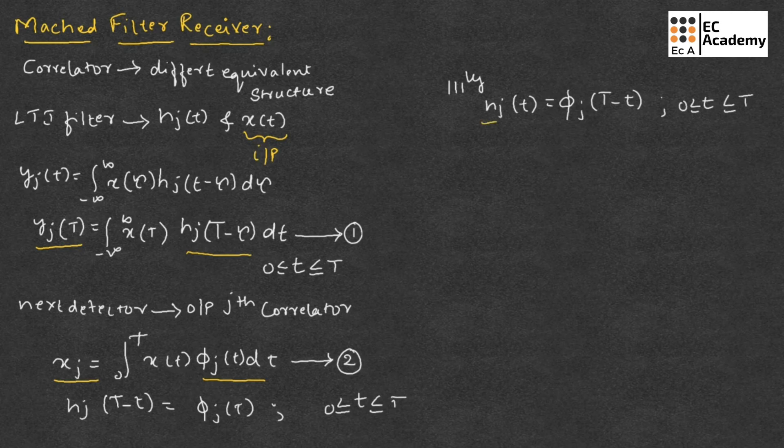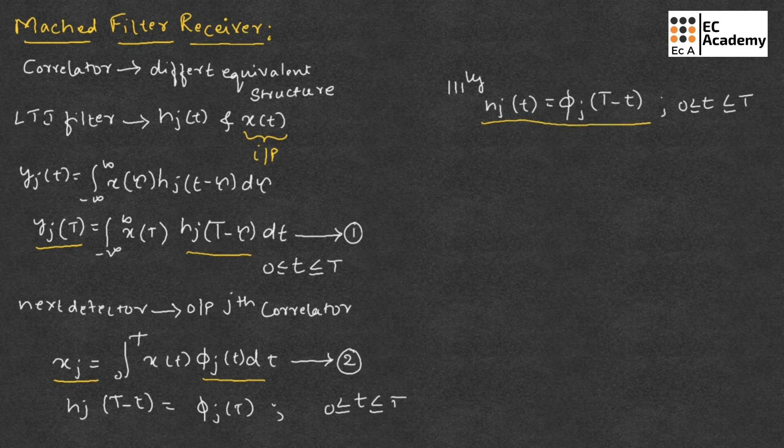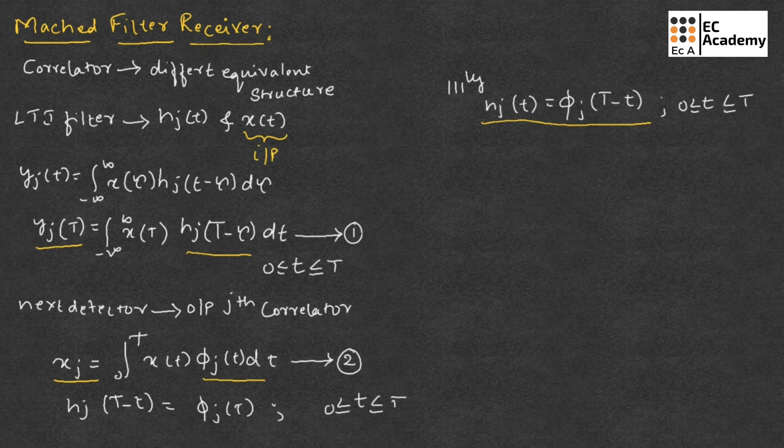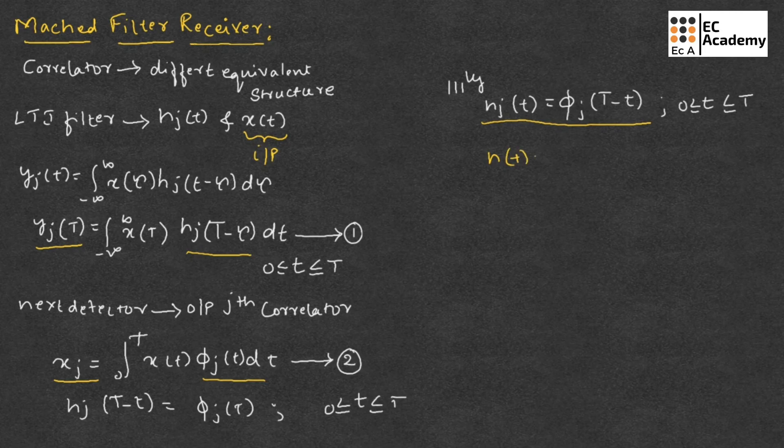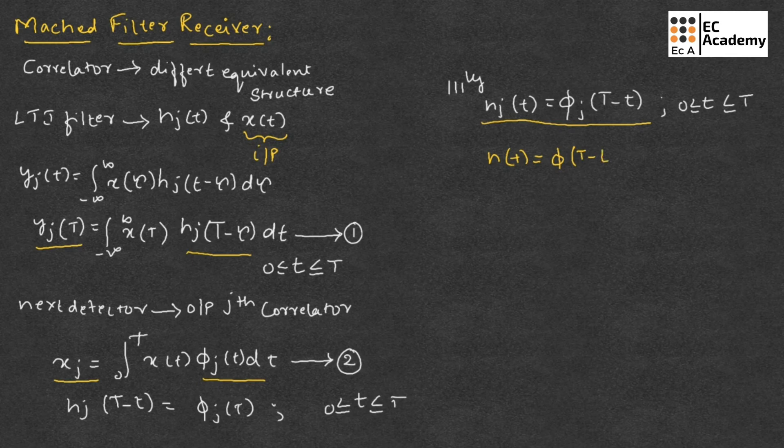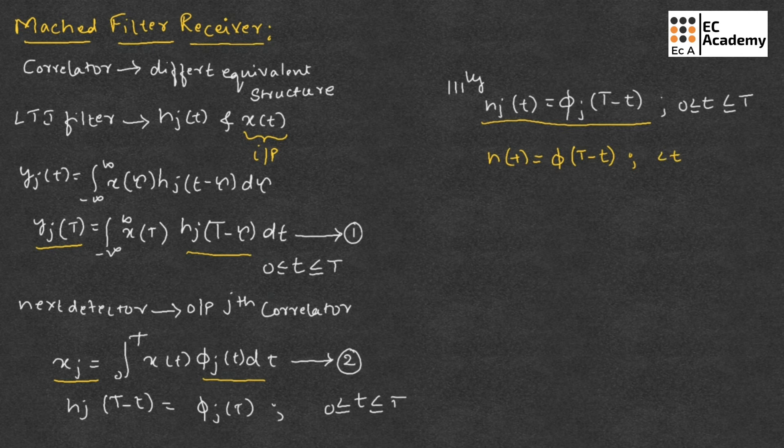We may now generalize this condition by stating that if a pulse signal phi of t occupying the interval 0 to capital T, a linear time invariant filter is said to be matched to the signal phi of t if its impulse response H of t satisfies the condition H of t is equal to phi of t minus t, for t value ranging between 0 to capital T.